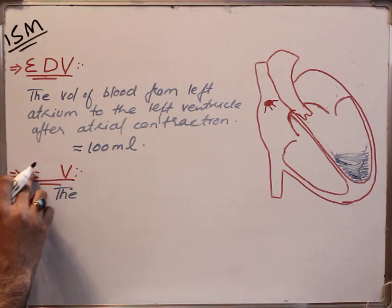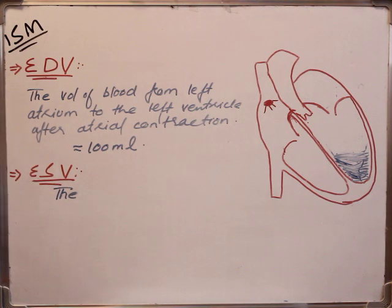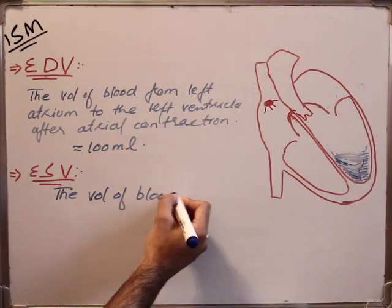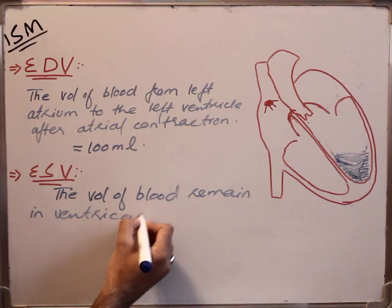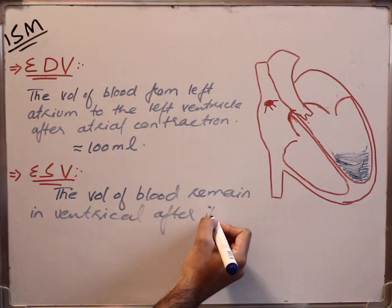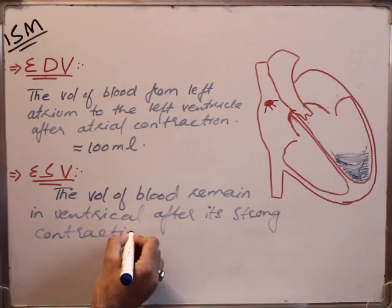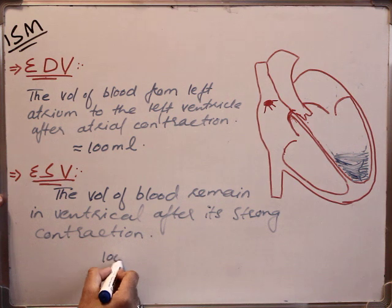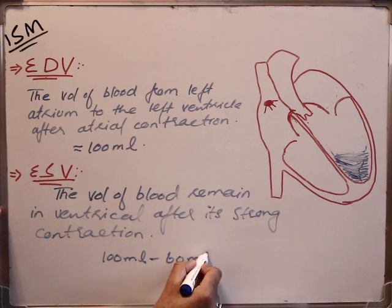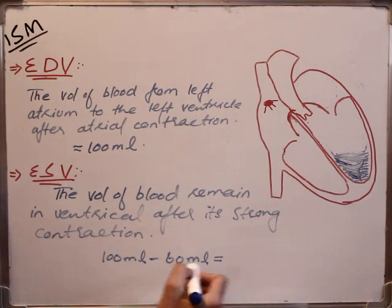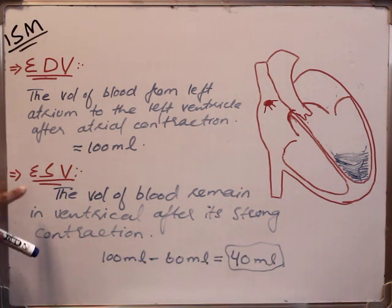The amount of blood that remains in the ventricle after a complete ventricular contraction is called end systolic volume. In end diastolic volume, 100 milliliters of blood reaches the ventricle; after contraction, 60 to 80 milliliters of blood goes to the aorta, so the remaining blood — 20 to 40 milliliters — is called end systolic volume.